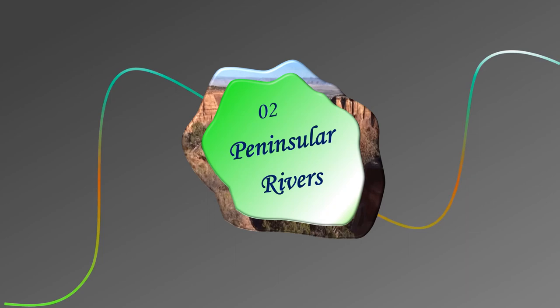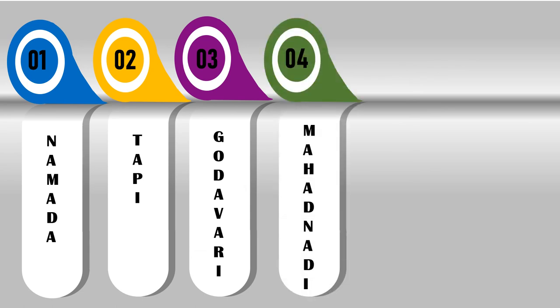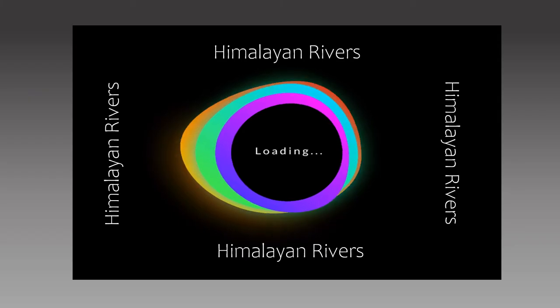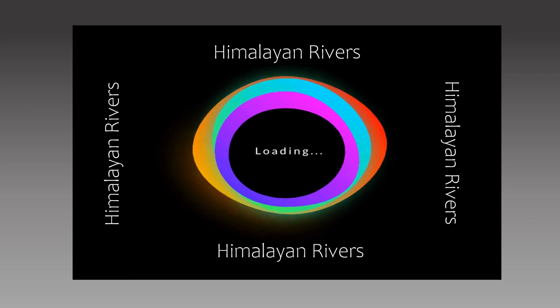Now let's look at the Peninsular rivers. The rivers that come under Peninsular rivers are: first, Narmada; second, Tapi; third, Godavari; fourth, Mahanadi; fifth, Krishna; and sixth, Kaveri. All these six rivers compile as the Peninsular rivers.